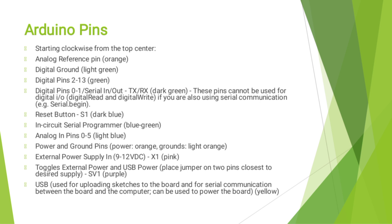The reset button S1 is dark blue. In-circuit serial programming pins are blue and green. Analog pins 0 to 5 are light blue. Power and ground pins are orange, and ground is light orange. For external power supply, you can input up to 12V. A jumper toggles between external power and USB power — place the jumper on the two pins closest to the desired supply. USB is used for uploading sketches to the board and for serial communication between the board and computer. It can also be used to power the board, and is represented as yellow color.